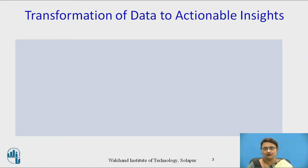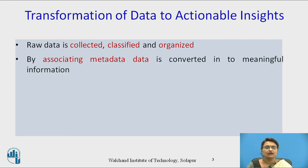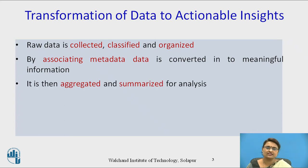Now, the transformation of data into actionable insights — till now we have operated on and manipulated data, but getting knowledge and information from data, which is converted as actionable insight for decision making, is very important. Raw data is collected, classified, and organized at the beginning, because raw data cannot directly be used for actionable insights. Then we associate metadata to that data, which converts it into meaningful information.